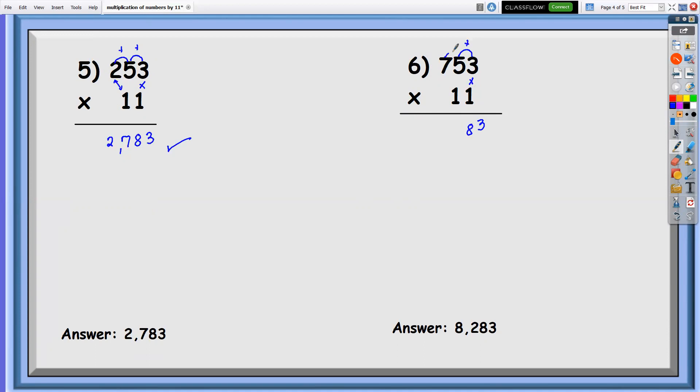And five plus seven, so that is 12. So of course, we have a carried number. And then we're going to multiply this. Seven times one is seven plus one. We have eight. Therefore, the answer is 8,283.